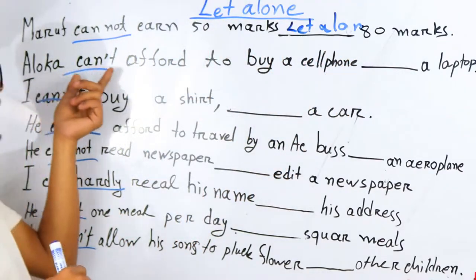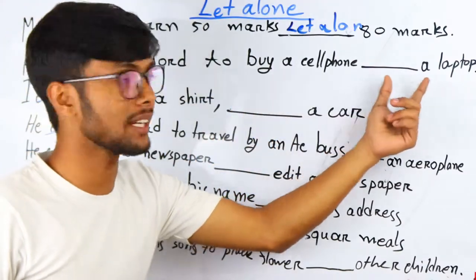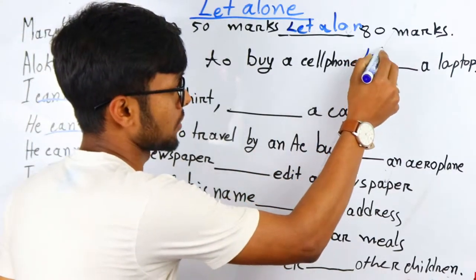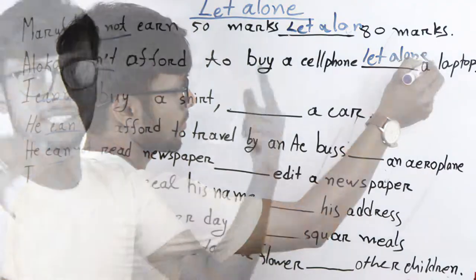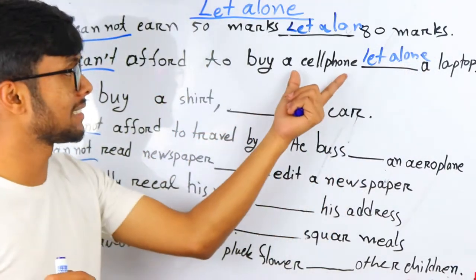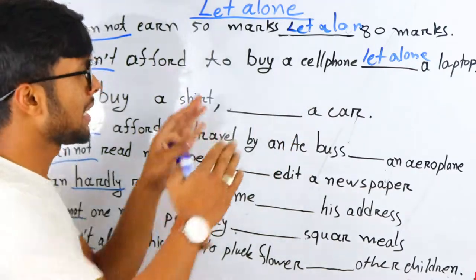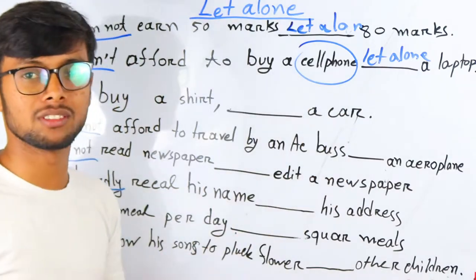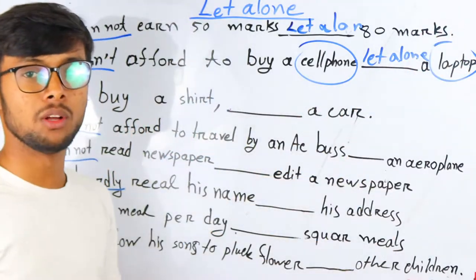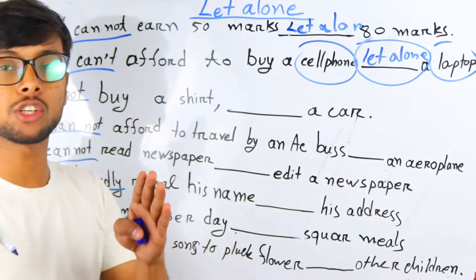Number two: 'Aloka cannot afford to buy a cell phone, let alone a laptop.' We use 'let alone' here because a laptop's price is huge, while a cell phone's price is not. If a person cannot buy a cell phone, how is it possible to buy a laptop? That's where we use 'let alone.'